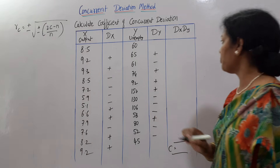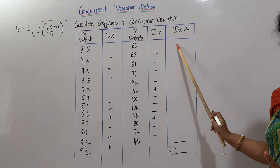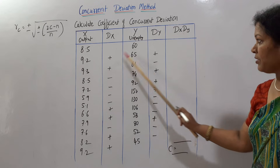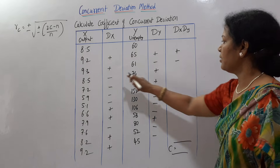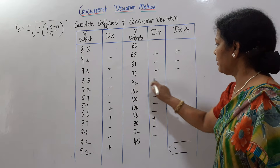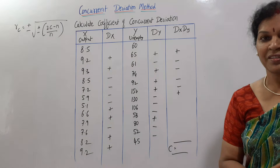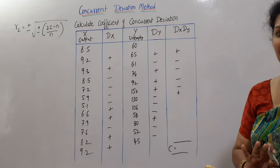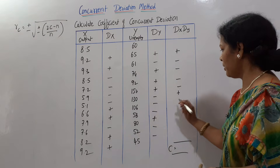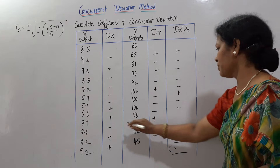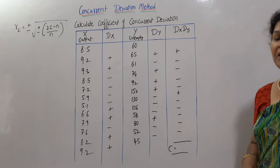Now for the dx into dy column: the first row has no sign so we leave it empty. Plus into plus is plus. Plus into minus is minus. Minus into plus is minus. Minus into minus is plus. Applying these rules: plus×plus=plus, plus×minus=minus, minus×plus=minus, and so on for all rows.